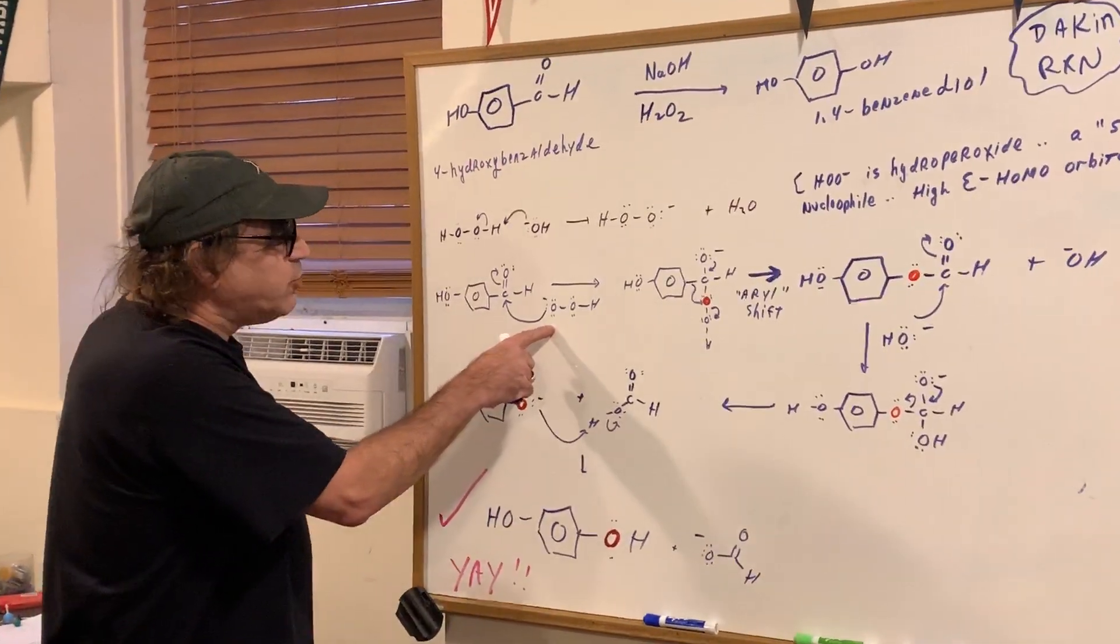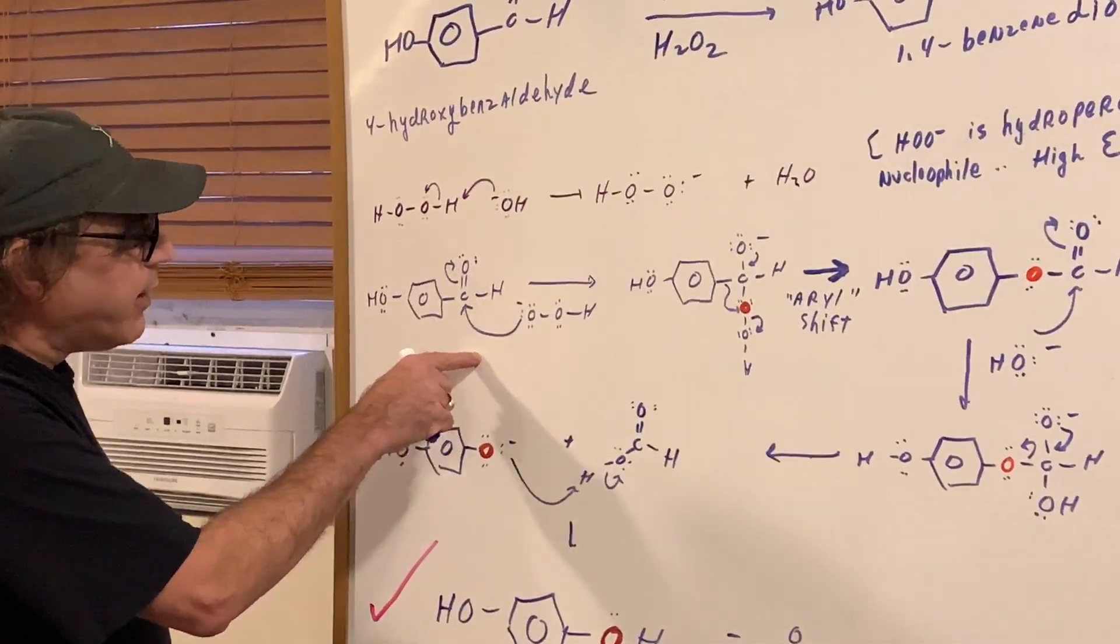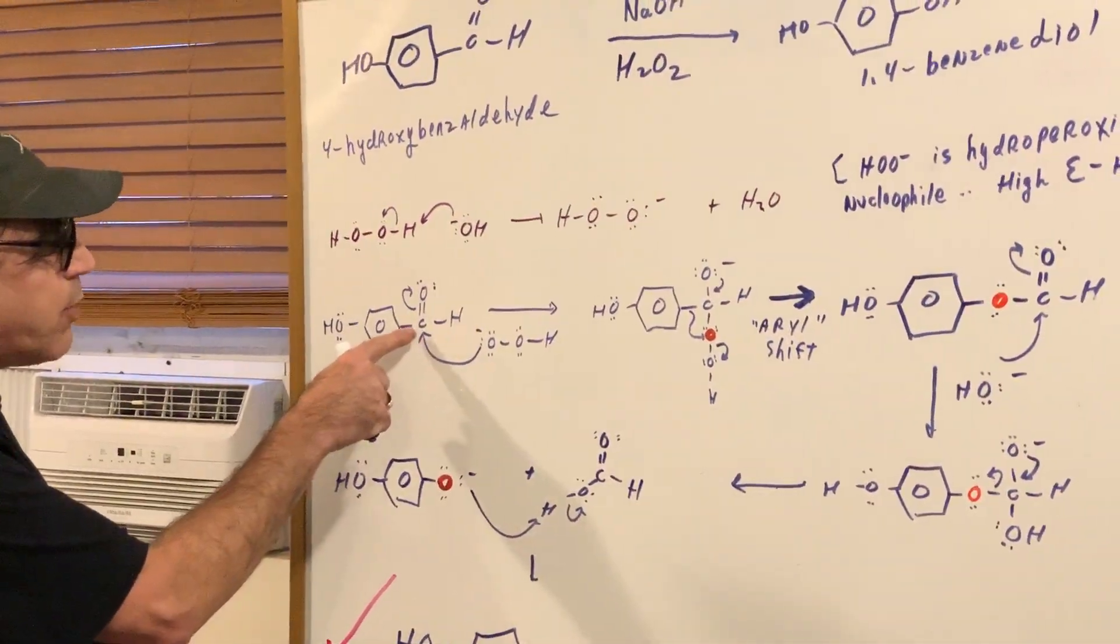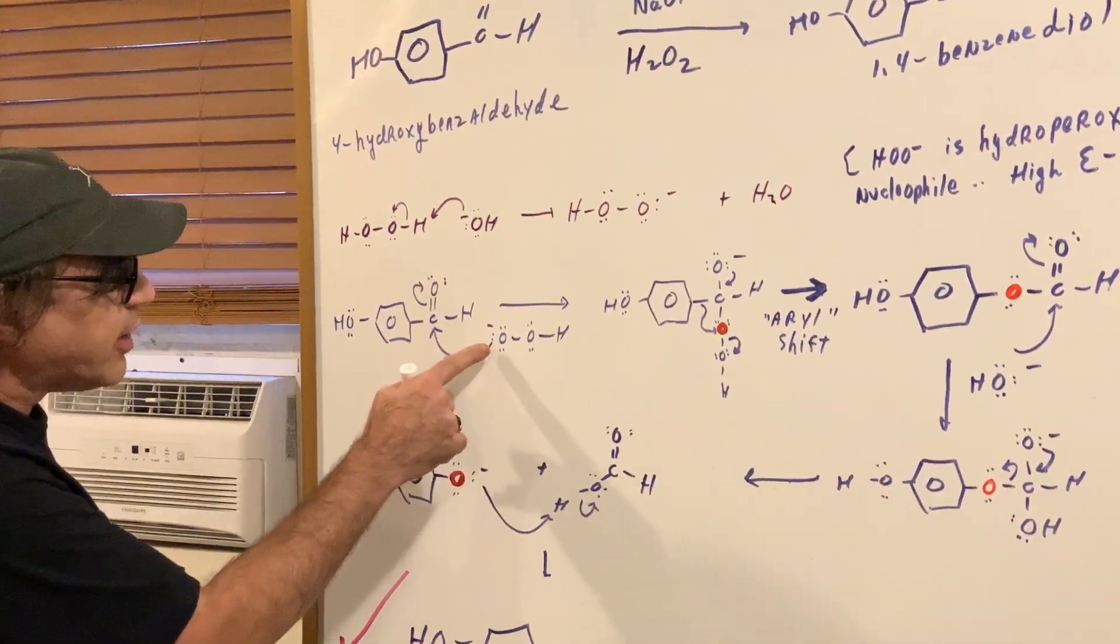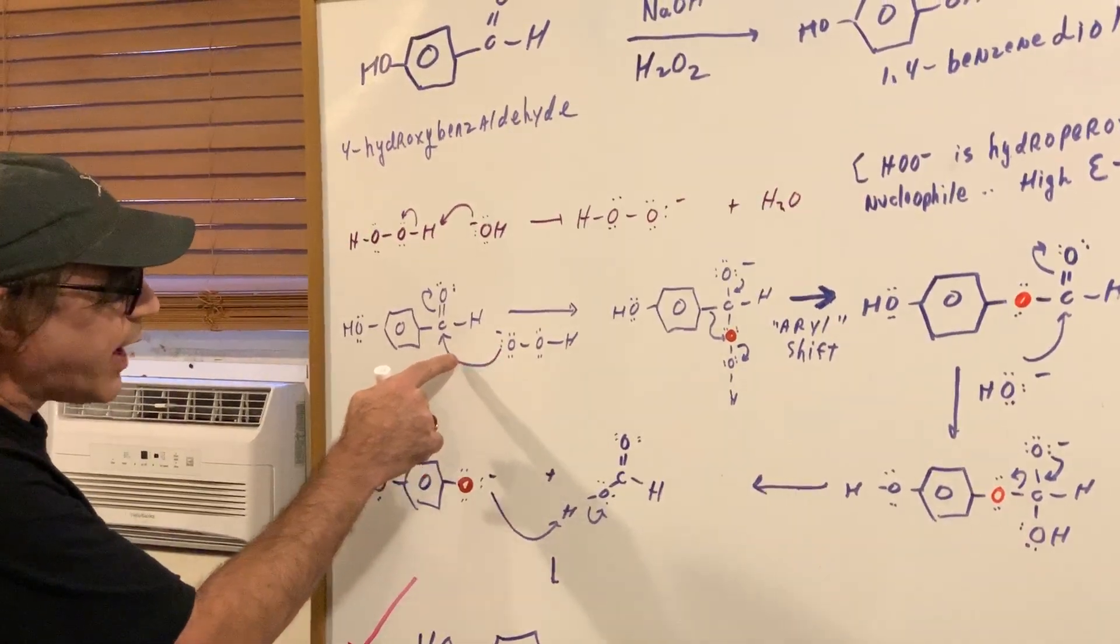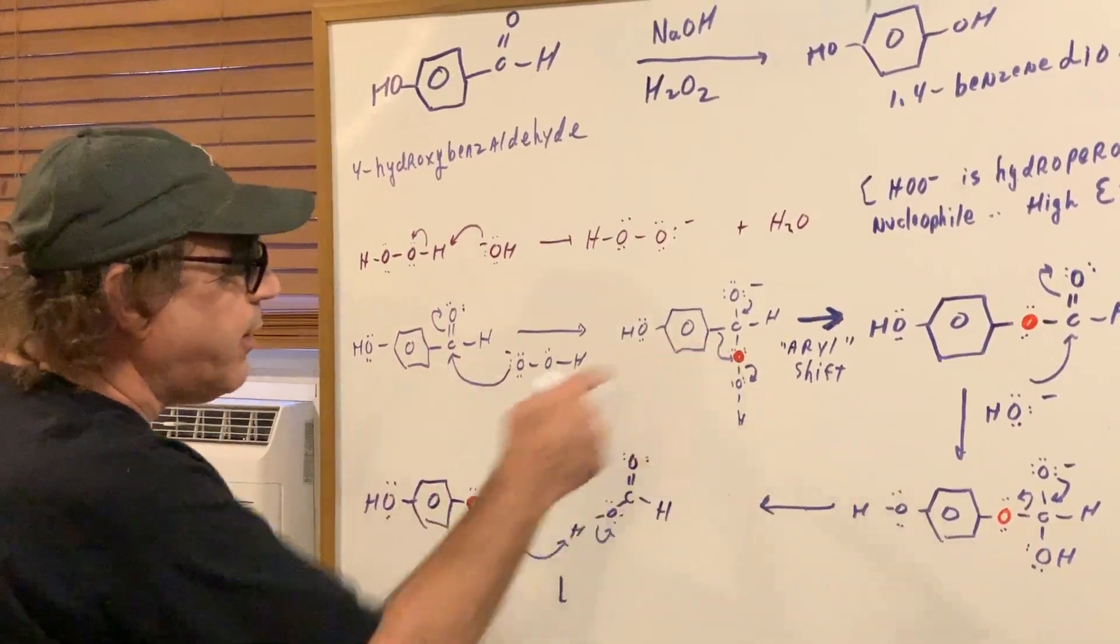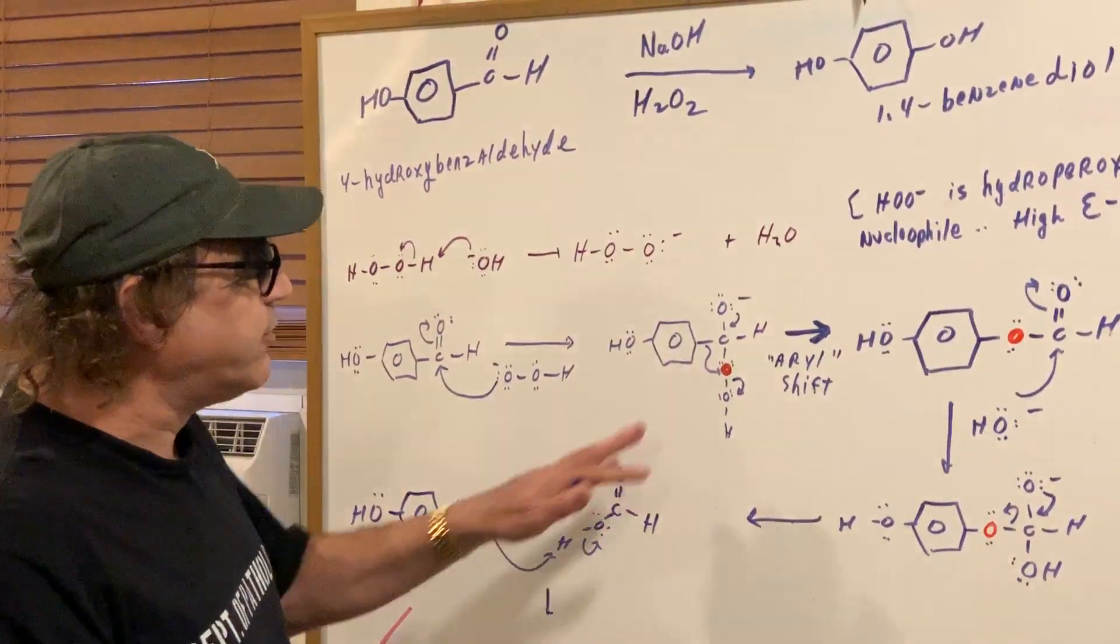So as you can see, that nucleophile is going to attack the antibonding orbital of the carbonyl compound. Now focus on how the arrows are moving. That's what I want you to focus on. So when that moves to here, we now have this intermediate.